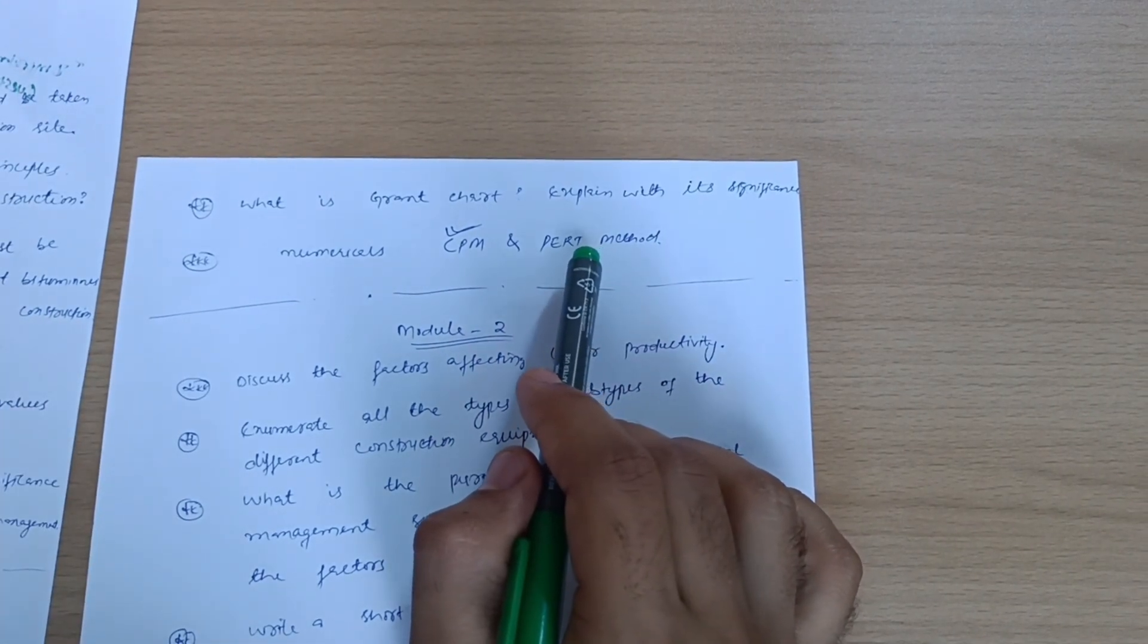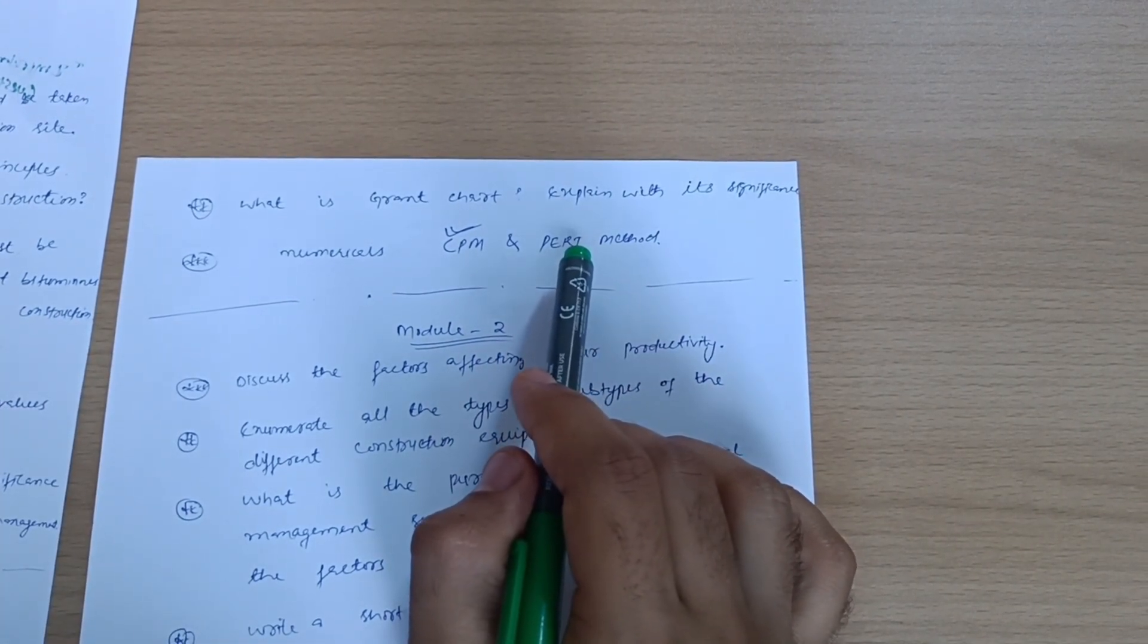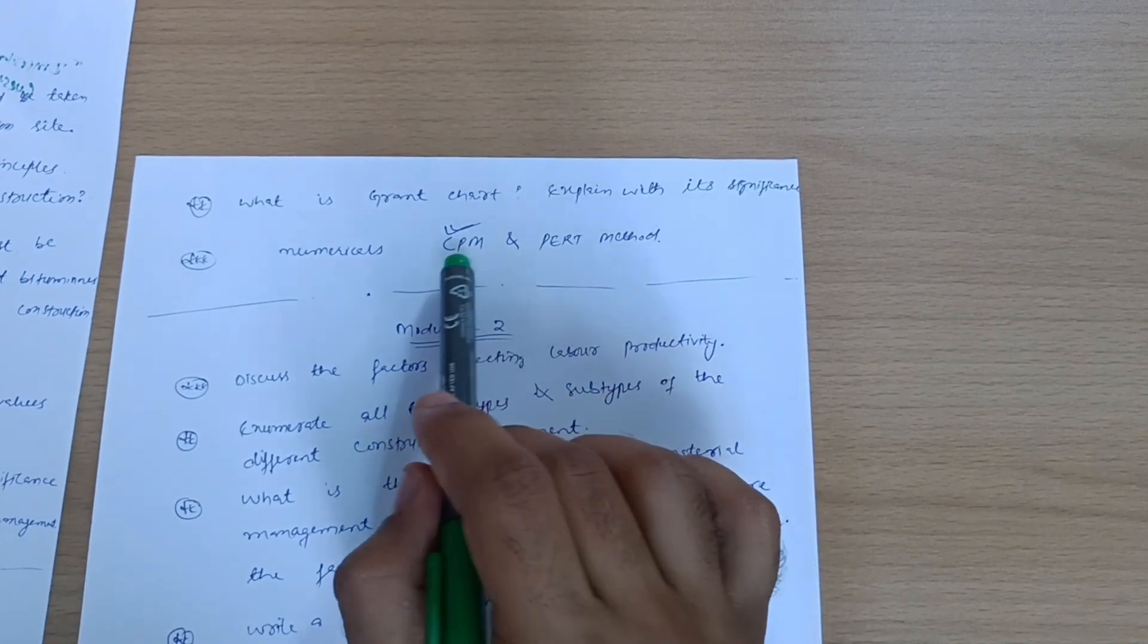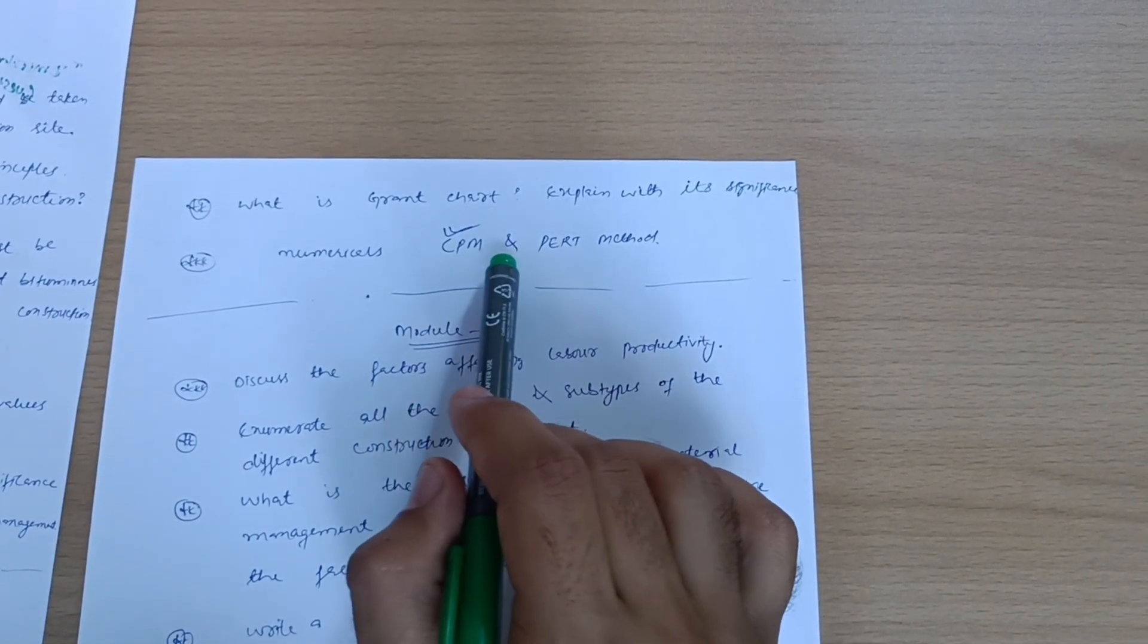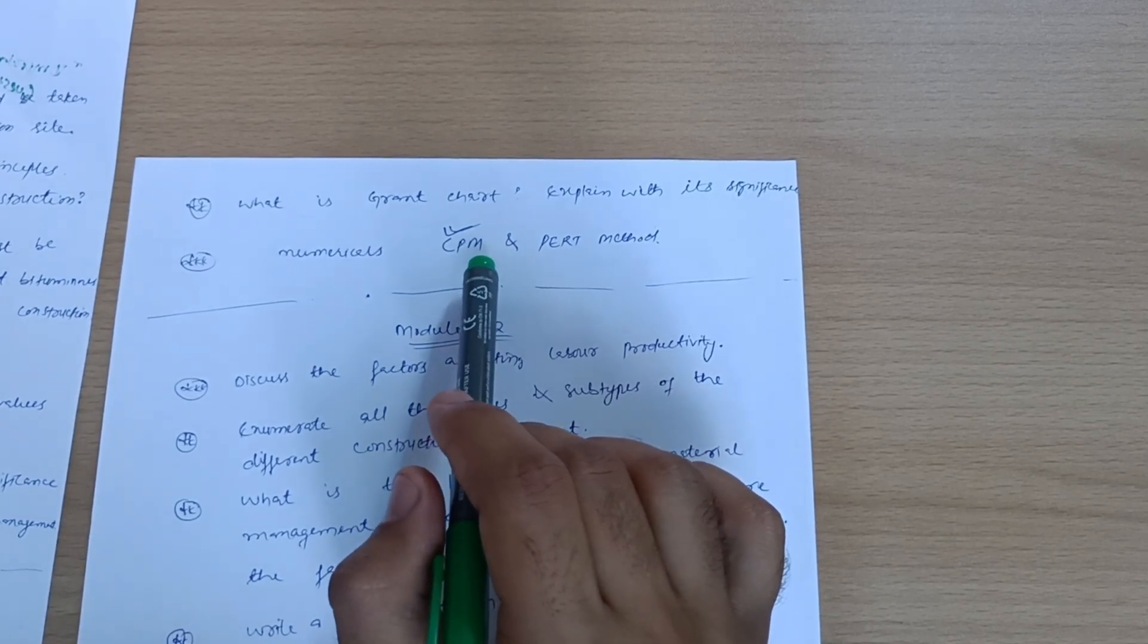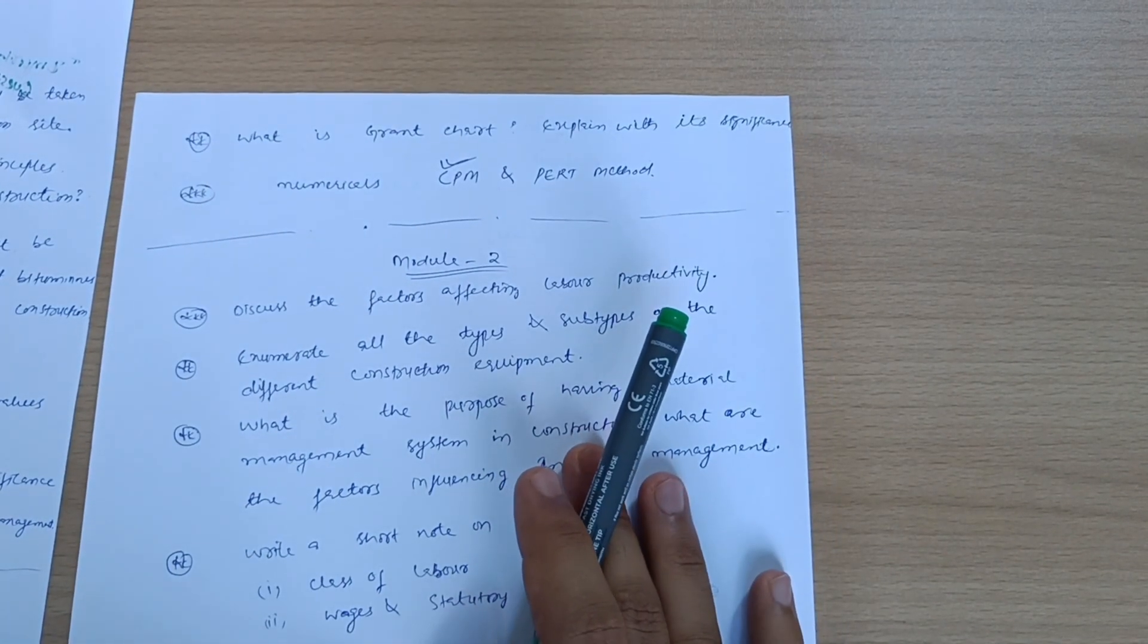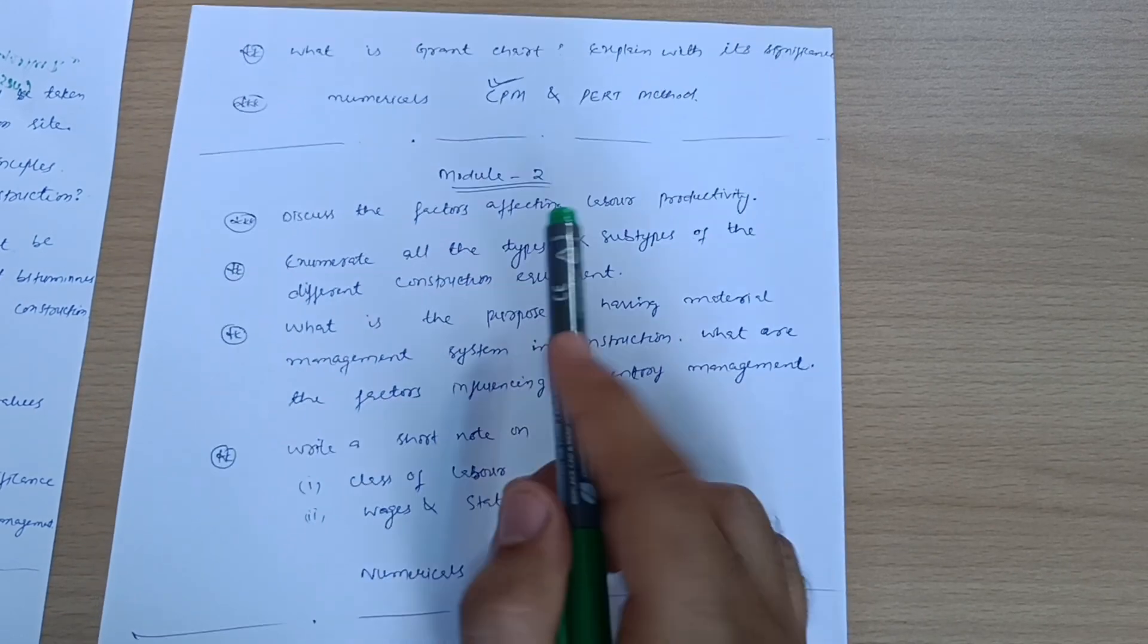And PERT method, so go through these. You have to refer to the papers 18 Civil 51 so that you can practice the varieties of numericals on these particular topics. Also on YouTube, varieties of videos are available. These are very simple problems. You can go through and you can easily grab 20 marks from Module 1 itself.